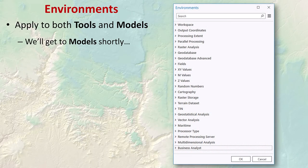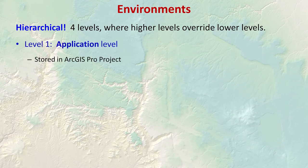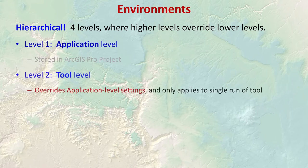Environmental parameters apply to both tools and models and are actually hierarchical — there are four levels. The first is the application level: you can set environmental settings within ArcGIS Pro itself, stored with your project. The second is the tool level, which overrides the application level. The issue is that you can set conflicting environmental settings — for example, your application level might say export data in UTM, but the tool level says use Web Mercator. The tool level wins, but it only lasts for a single run.